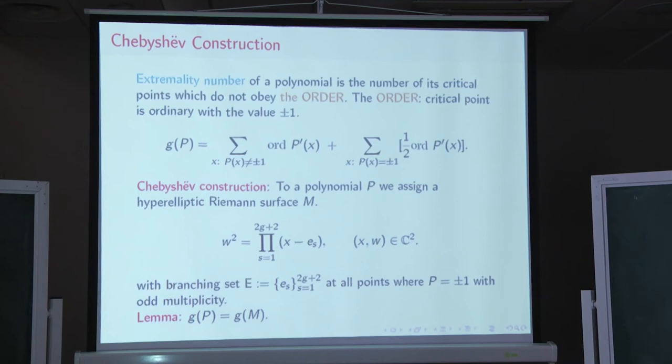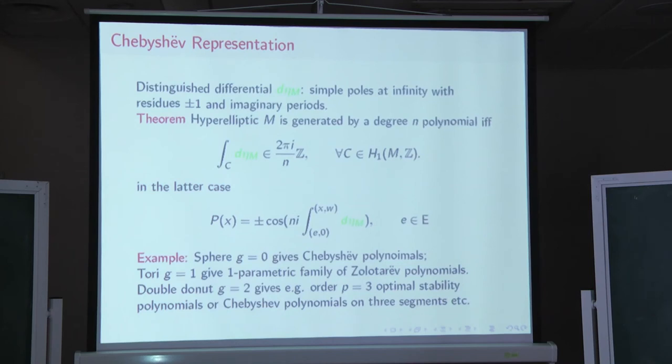So, what is this Riemann surface? This is a very simple Riemann surface. It is two-sheeted Riemann surface. That is, today we say it is hyperelliptic surface with branching set exactly at the points where the polynomial takes values plus or minus one without multiplicity. Here, for instance, for the Chebyshev polynomials, that's with the end point of the segment minus one. One can prove, it's quite simple, that the extremality number of every polynomial, that is, number that you can count as a number of exceptional critical points, is exactly equal to the genus of this Riemann surface. The genus is a number of handles in its topological model of the surface.